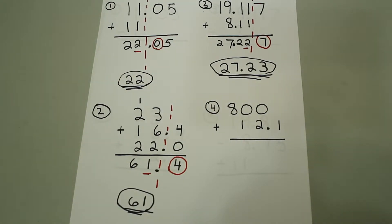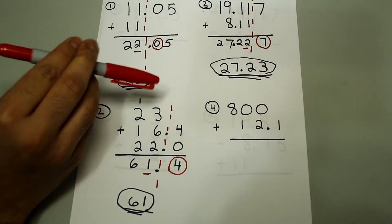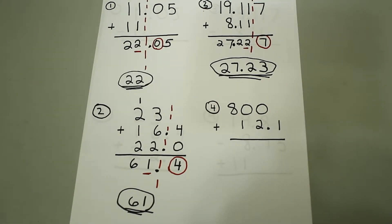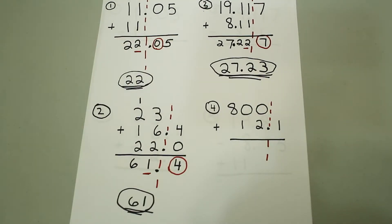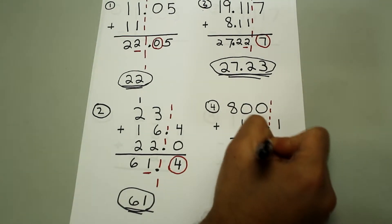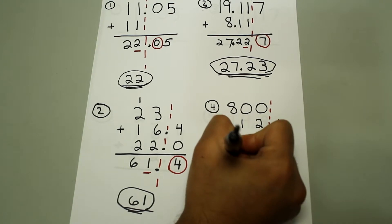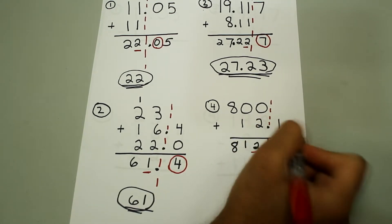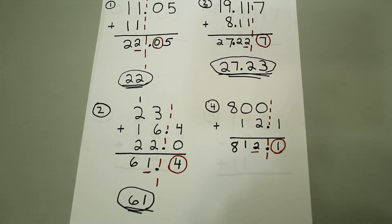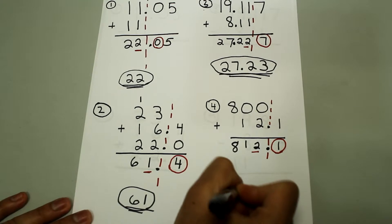Next we have 800 plus 12.1. Don't get confused and say that 800 only has one significant figure — although it has one significant figure, when we're adding we're only concerned with the number of decimal places. We draw the dashed line right after the last zero in 800. The final answer will not have any decimal places. Adding straight down and rounding to the nearest whole number: since 1 is less than 5, we round down, and the final answer will be 812.